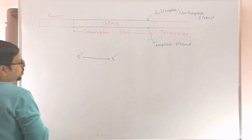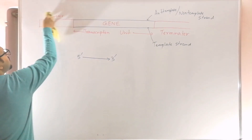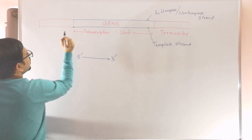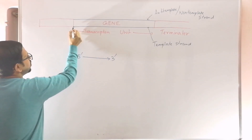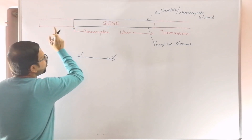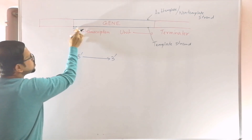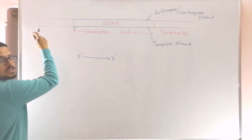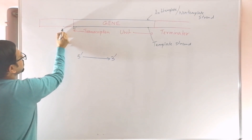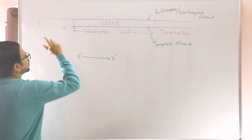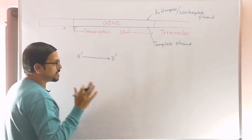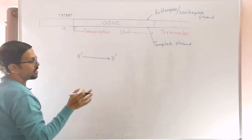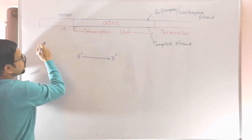In the promoter there are specific sequences. The first nucleotide that participates in transcription is the plus one nucleotide. Going in one direction the nucleotides are numbered plus 2, plus 3, plus 4, and so on; in the other direction they are minus 1, minus 2, minus 3, and so on. In the minus 10 region, a specific 6-nucleotide-long sequence is present — the sequence is TATAAT.